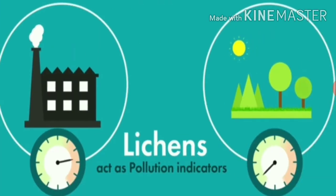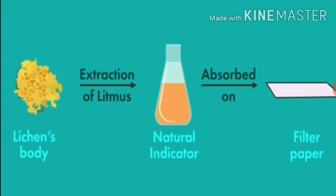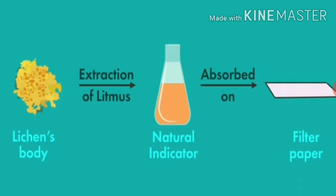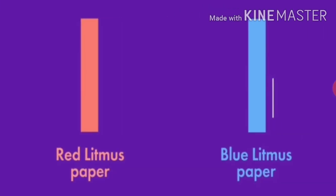Lichen also acts as a pollution indicator. From lichen's body, the extraction of litmus takes place. This natural indicator, litmus, is absorbed on filter paper, and it is available in the form of solution or paper strips of two colors: blue and red. This is the red litmus paper and this is the blue litmus paper.